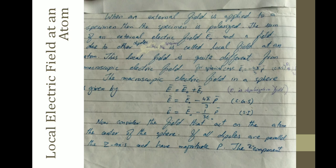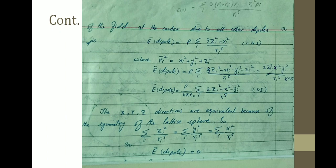In the SI system, E equals E-naught minus P/(3ε₀). Now consider the field that acts on the atom at the center of the sphere. If the dipoles are parallel to the z-axis and have magnitude p, then the z-component of the field at the center due to all other dipoles, E_dipole, is equal to: